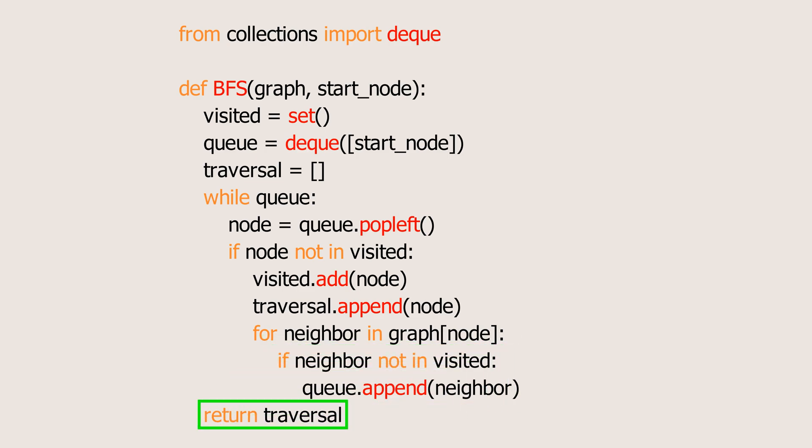After the loop completes, we return the traversal list, which contains the nodes in the order they were visited.